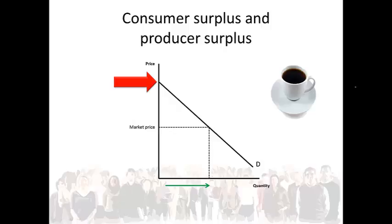Sally therefore pays far less for coffee than she is actually willing to and saves a lot of money. The amount of money that is saved is called the consumer surplus.